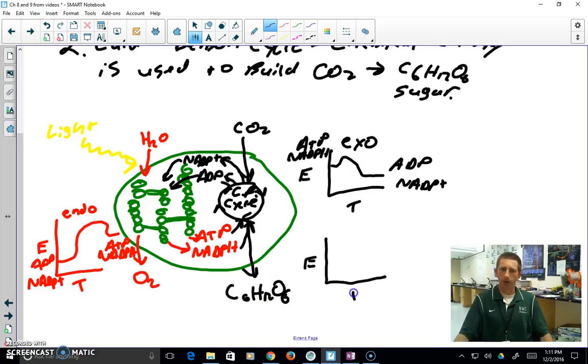Draw one more graph, energy, time. This is our endothermic side. We're going to start with CO2, and all energy in our full batteries, in our full baskets is going to be used to build that CO2 and put it all together into C6H12O6. And that, ladies and gentlemen, is the process of photosynthesis.